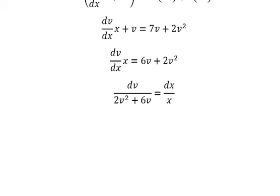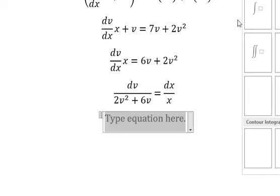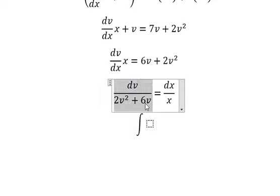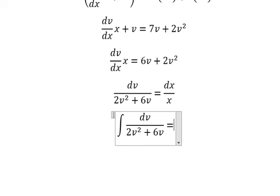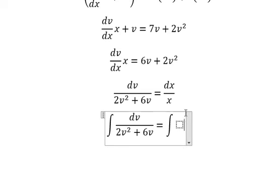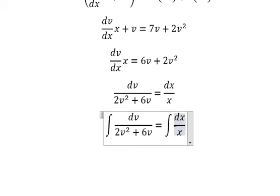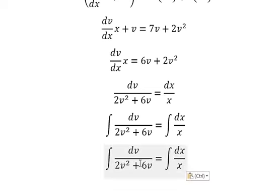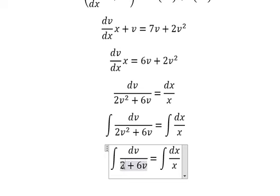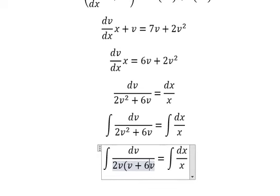Next we put the integration for both sides. We can do factorization, and we put 2 outside. So now we have like this.